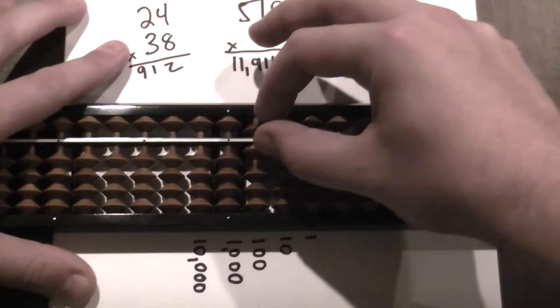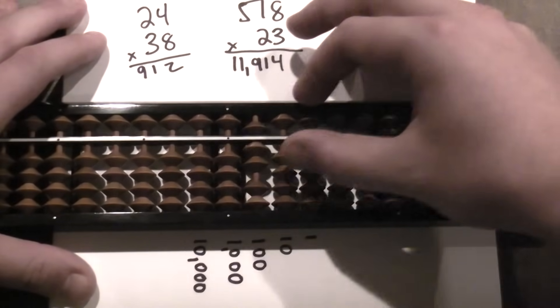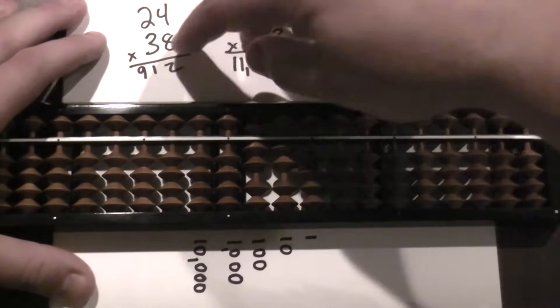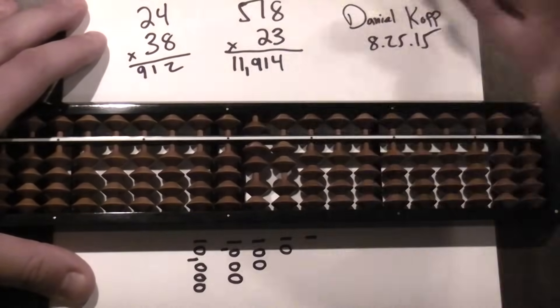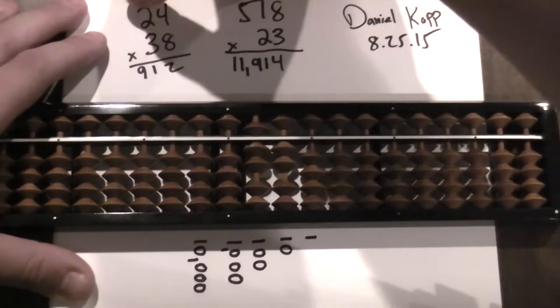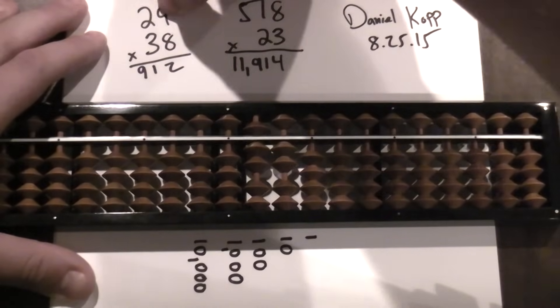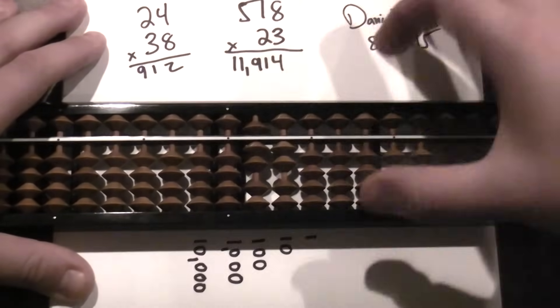Now I do three times four which is twelve, one, two. Alright, so now I go to my next number which is going to be eight. But I need to know how many places over I need to start. So I start here. One, two, three. I need to go three places over.